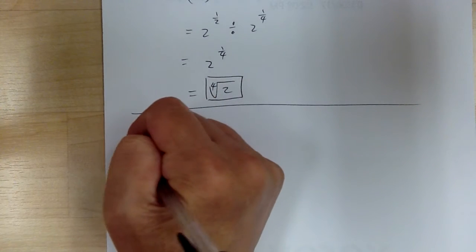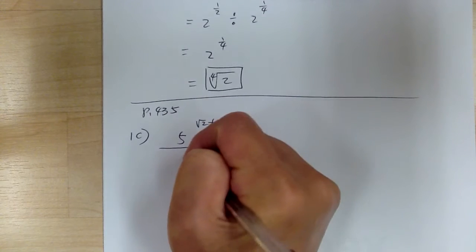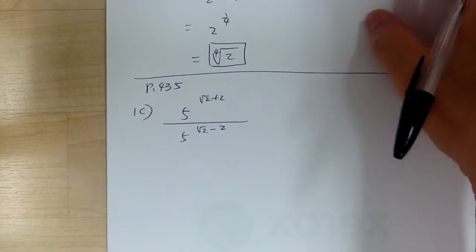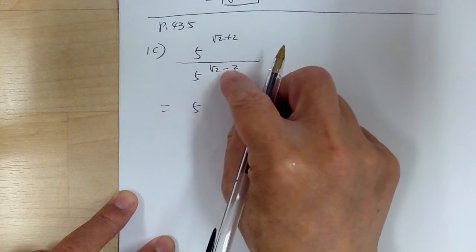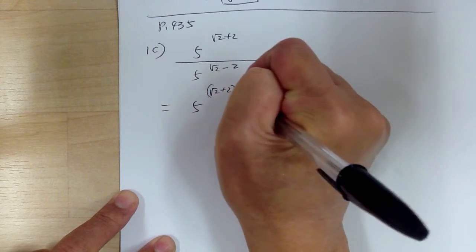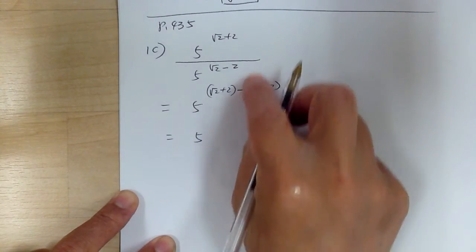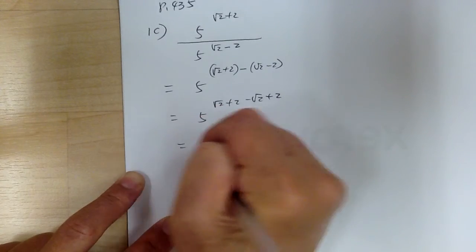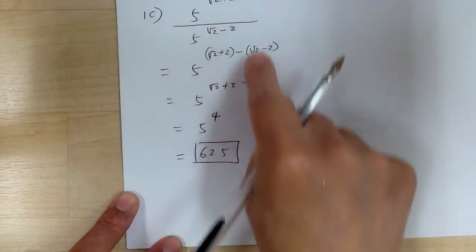Let's start with 1c on page 435. You have 5 to the square root of 2 plus 2, divided by 5 to the square root of 2 minus 2. When you have division, subtract the exponents. So this equals 5 to the quantity square root of 2 plus 2, minus square root of 2 minus 2. Watch the signs when you subtract — you get square root of 2 plus 2 minus square root of 2 plus 2, which gives 5 to the 4, equal to 625.